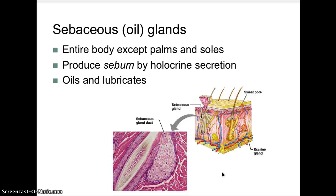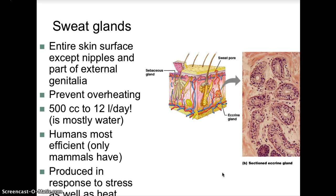Sebaceous glands are oil glands found on the entire body except the palms and soles. They produce sebum by holocrine secretion, providing lubrication and water protection. Sweat glands are on the entire skin surface except the nipples and part of the external genitalia. Sweat glands help prevent overheating and can produce 500 cubic centimeters to 12 liters per day — mostly water. Of all mammals, humans are the most efficient with sweat glands. Sweating is produced in response to stress and heat.